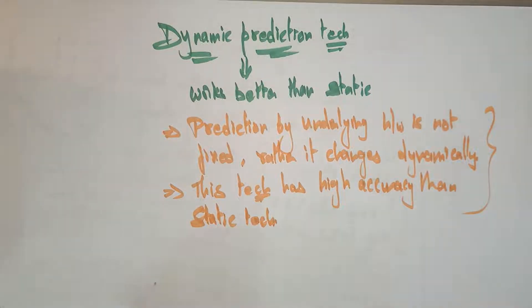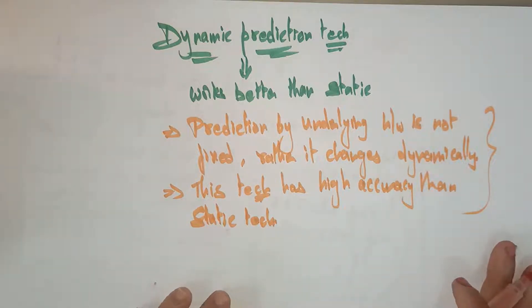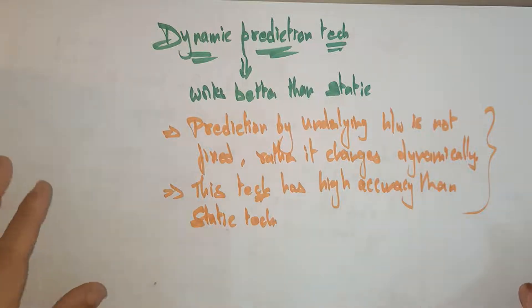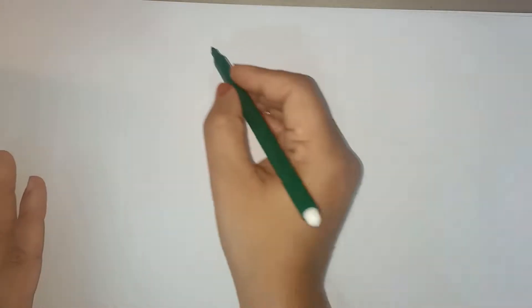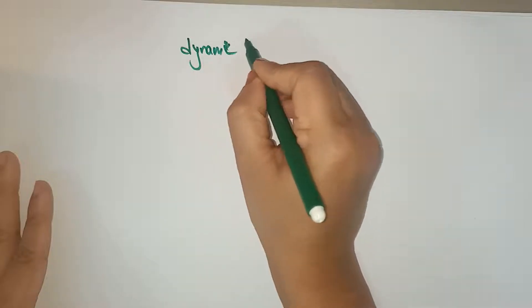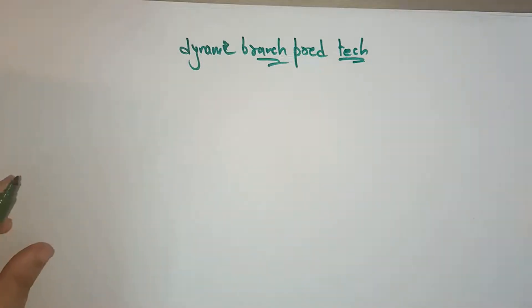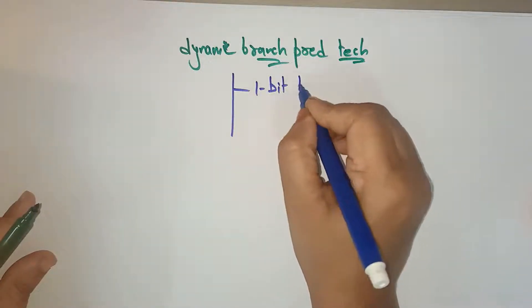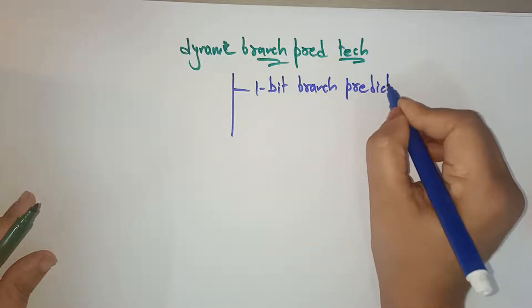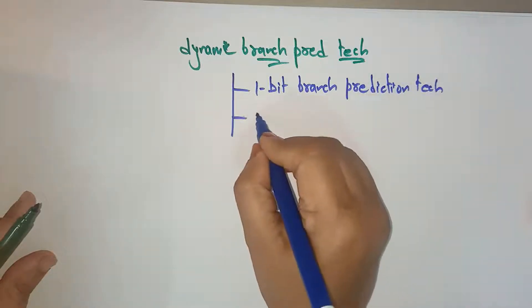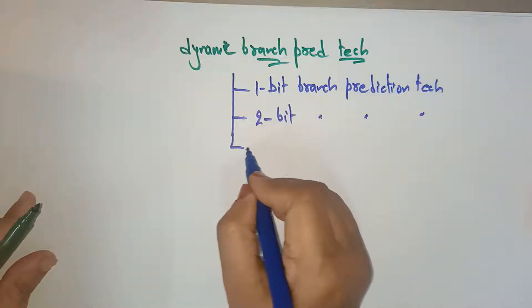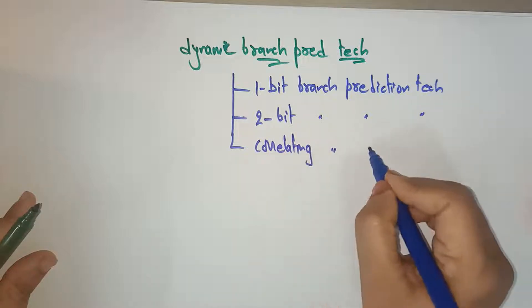The prediction hardware is not fixed — it changes dynamically — and this technique has high accuracy than the static technique. There are different dynamic branch prediction techniques: one-bit branch prediction technique, two-bit branch prediction technique, and correlating branch prediction technique.